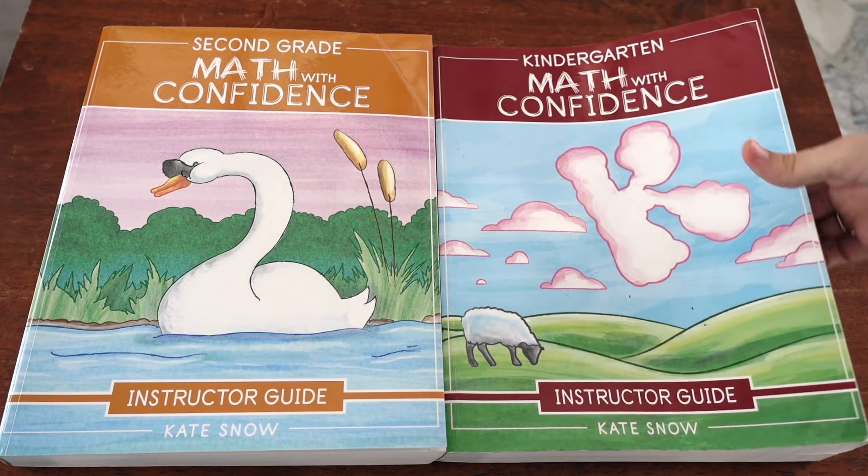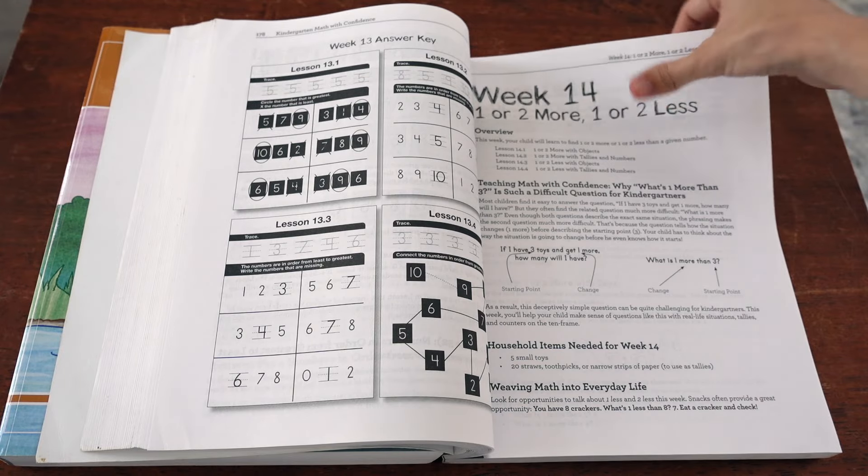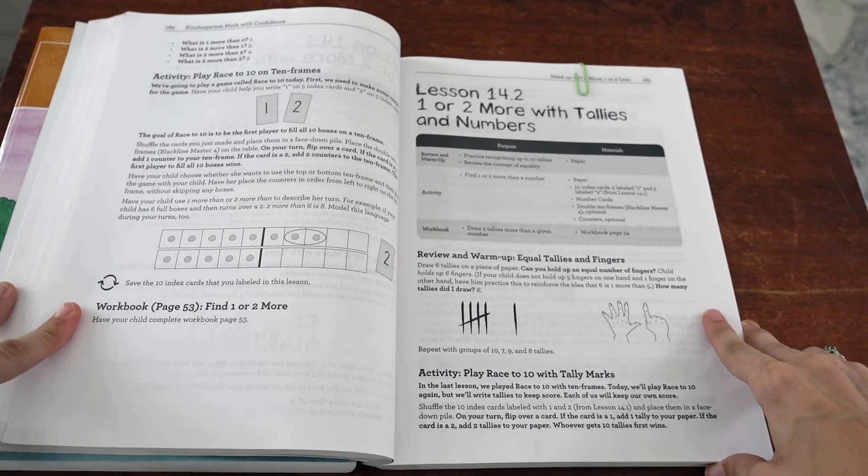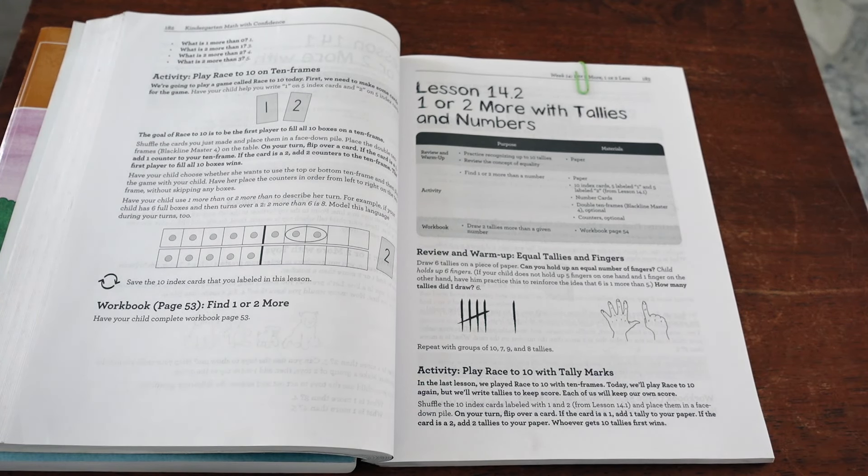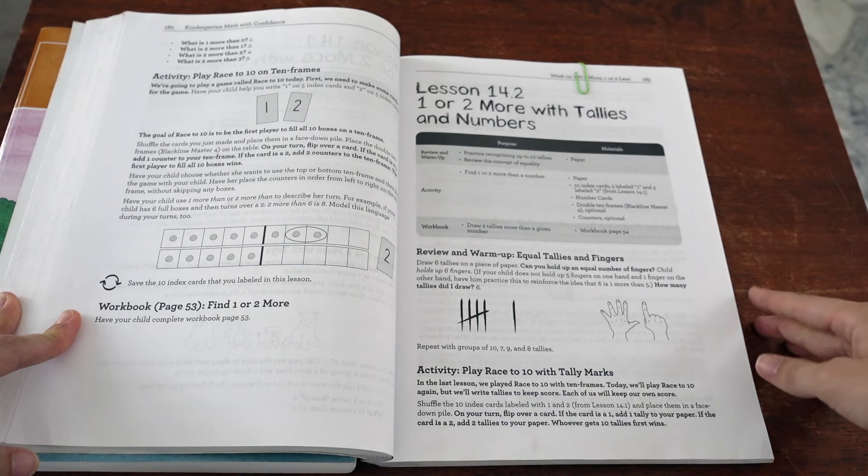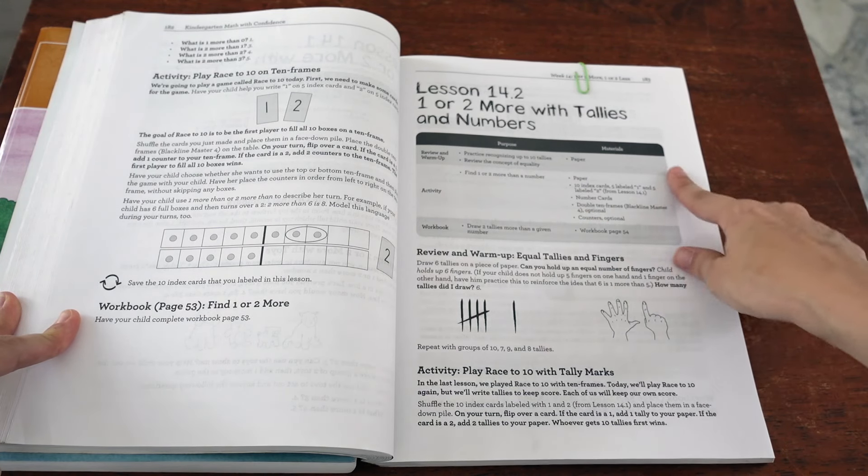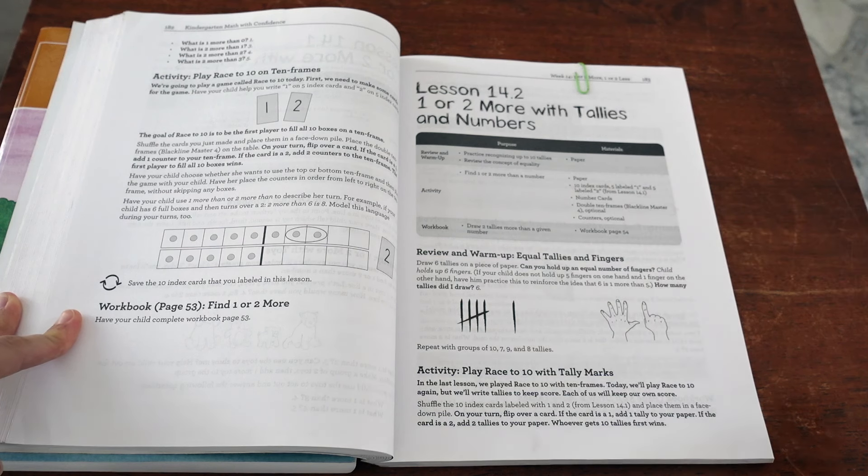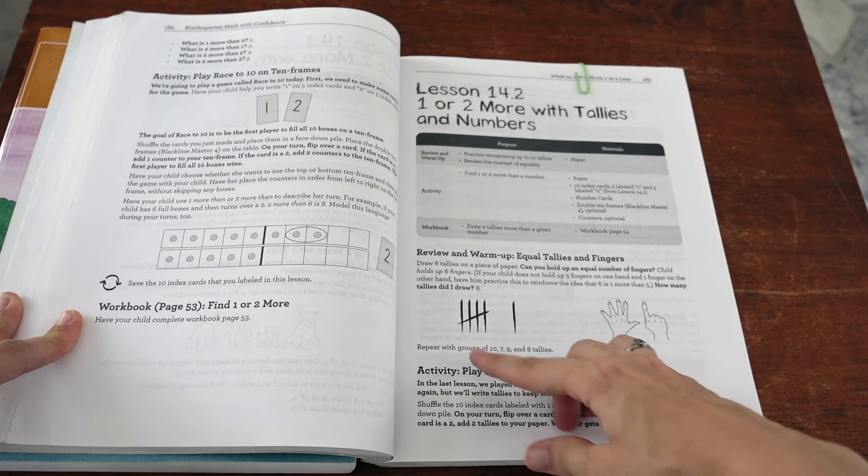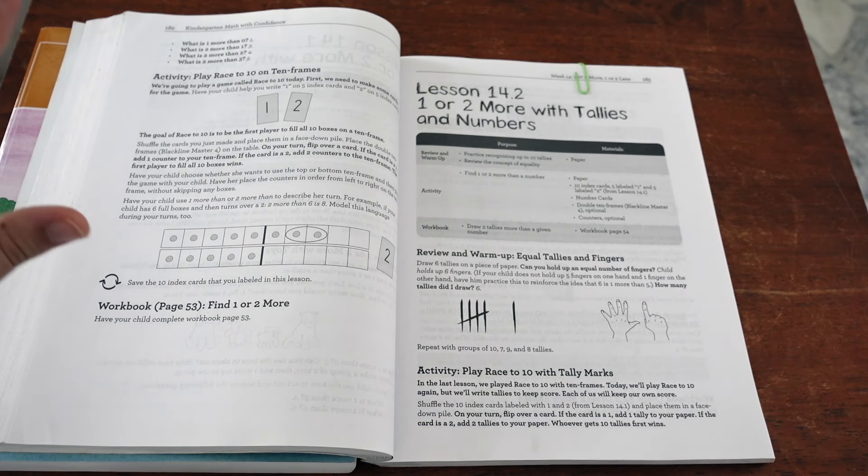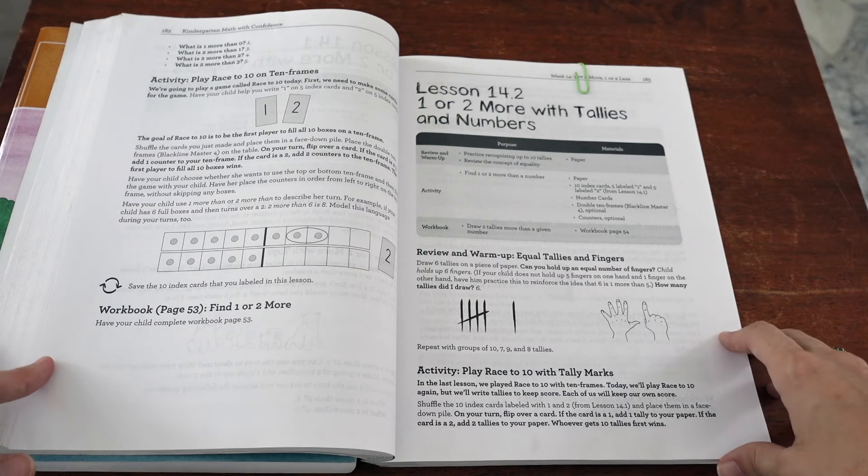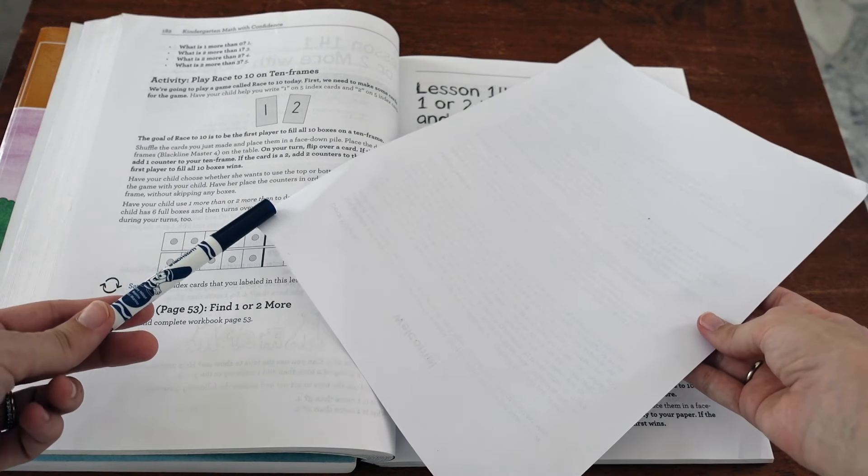So what I do is I pull out both teachers guides. I flip to my handy dandy high tech paper clip that lets me know what lesson we're working on. And I just start reading through the lesson. I feel like this is definitely going to take longer in a video format than it takes in real life, because as you probably know, it takes less time to think about something than it does to explain something. But I will fully admit I skip right past all the materials and everything. And I just read through the activities. So the review and warm up for today is you're drawing tally marks on paper and having your child match the tally marks that you draw with their fingers. And you can do that with a couple numbers. Great. That's easy. All I need is a piece of paper and a marker. Here we go. Piece of paper and a marker.